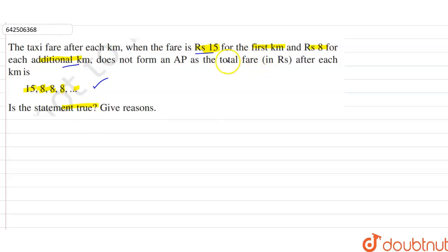It is given that the fare is Rs.15 for the first kilometer, so a₁ = 15.